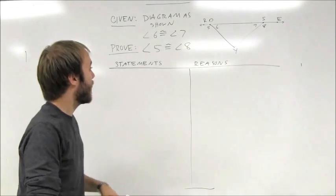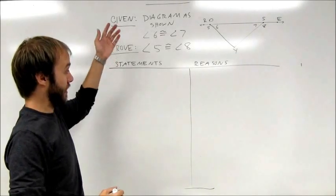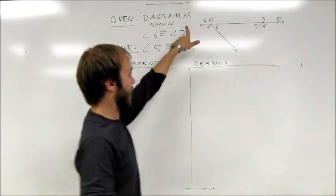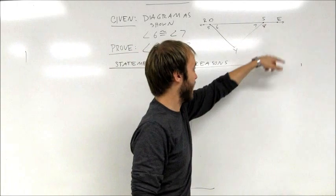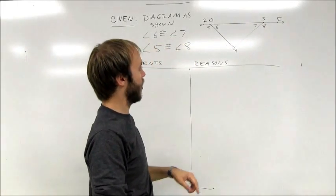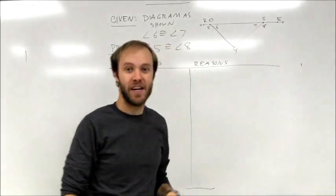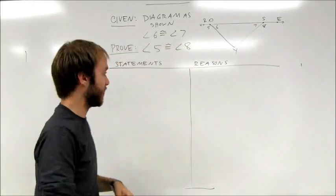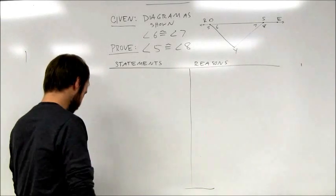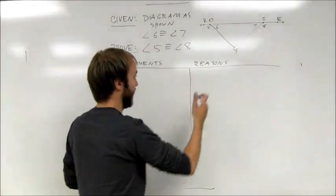Let's take a look at this proof. If you look at the original given, the given tells you that you have the diagram as shown. We have this straight line here with what appears to be a triangle dropping below it. We have angles labeled 5, 6, 7, and 8 — those are the angles we're going to be focusing on in this problem. We're told that angle 6 is congruent to angle 7.